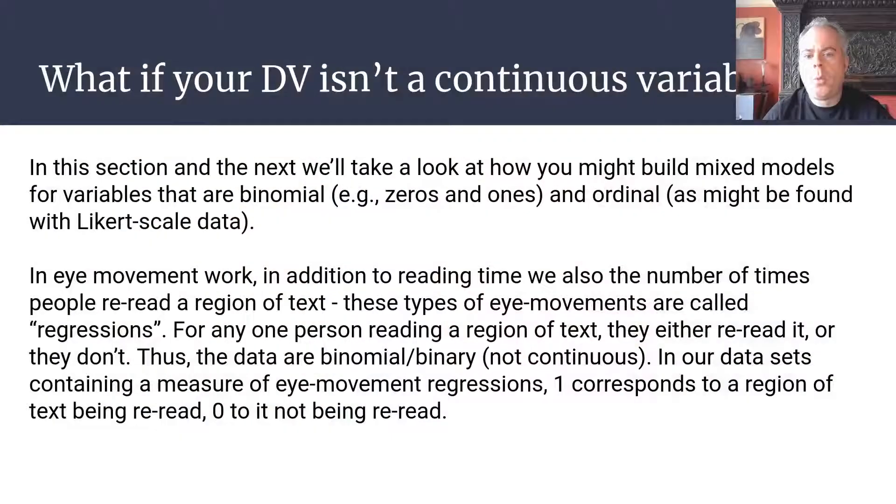We're going to move on now. In this section and in the next section, we're going to look at how we build generalized mixed models for outcome variables that are binomial—in other words, when our dependent variable is just a one or a zero. In the final video, we're going to look at building models where our dependent variable is measured on an ordinal scale, as might be the case if you've used some sort of Likert-type scale to collect your data.